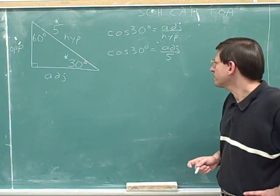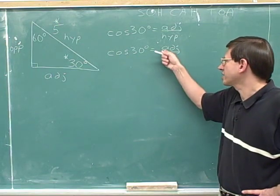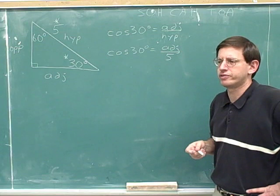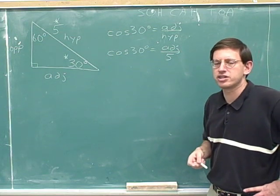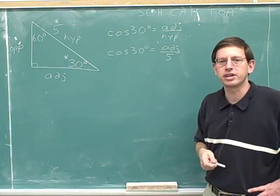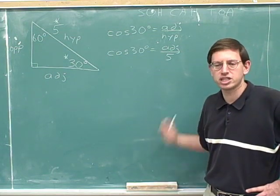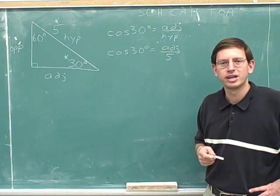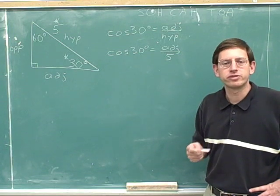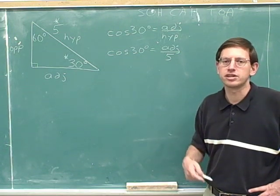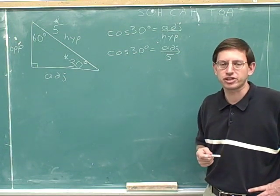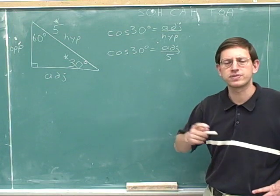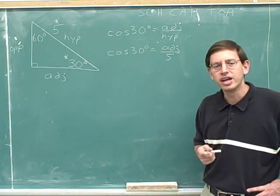Notice that we've got a fraction here on the right-hand side of the equation. Any time you have two fractions that are set equal, you can get rid of the fractions by cross-multiplying. That's a really useful algebra trick.